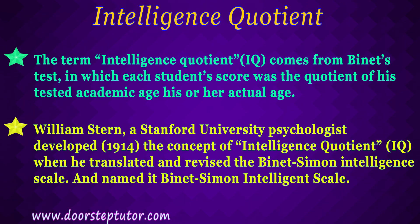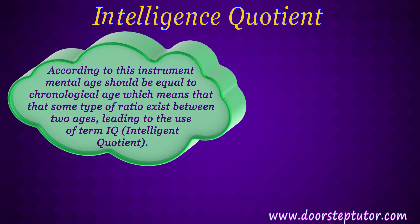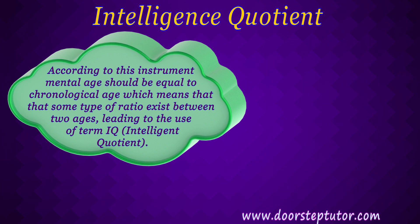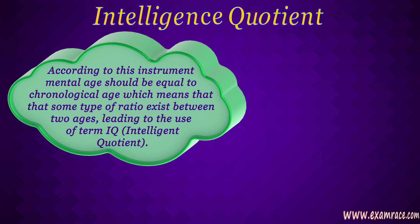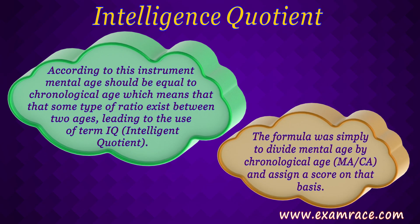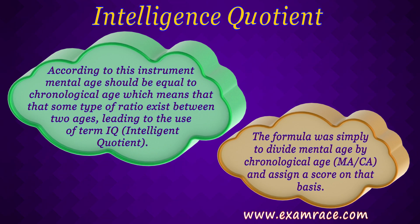Hence the name of the new instrument: the Stanford-Binet Intelligence Scale. In this instrument, the reasoning that mental age (MA) should equal chronological age (CA) for an average child led him to believe that some type of ratio must exist. This ratio led to the use of the term IQ or intelligence quotient. The formula was simply to divide mental age by chronological age — MA divided by CA — and assign a score on that basis.